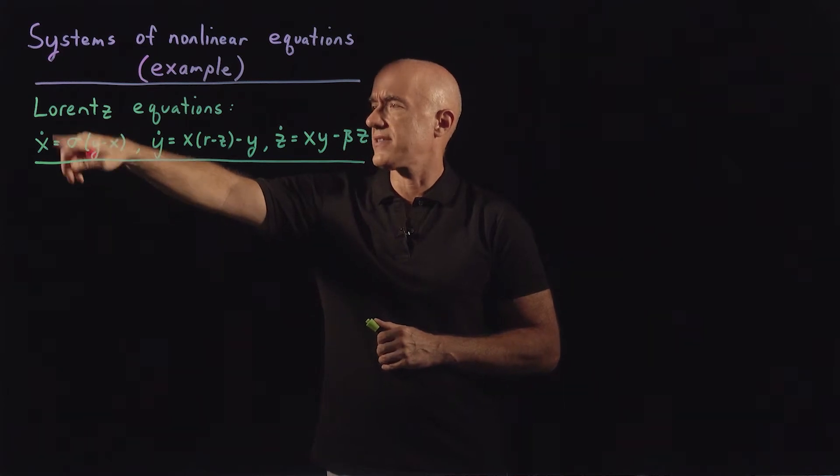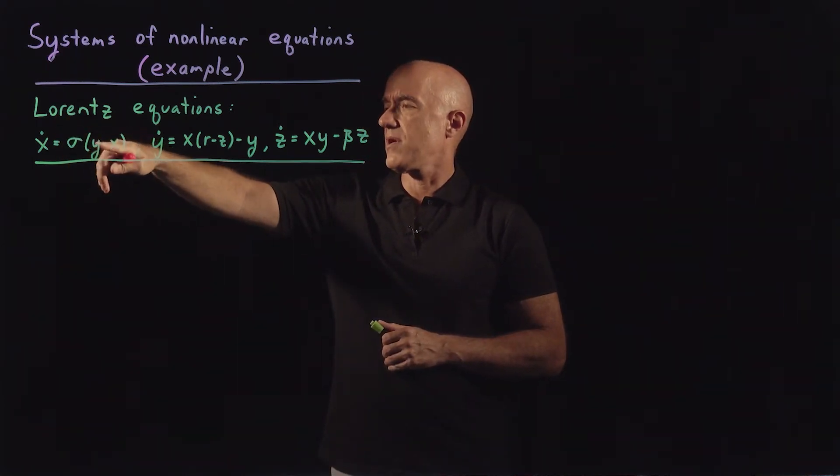The equations are x dot, that's dx/dt, equals sigma times y minus x. Sigma is a parameter.